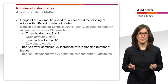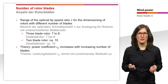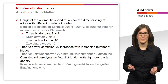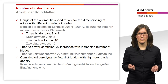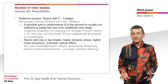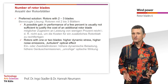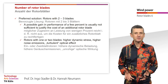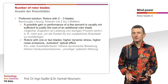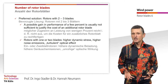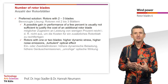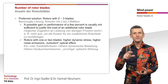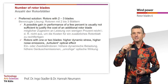In theory, the power coefficient increases with increasing number of rotor blades. However, a high rotor blade density leads to a complicated aerodynamic flow distribution. That is the reason why nowadays we only have wind turbines with 3 rotor blades — with very few exceptions of 2-bladed ones. For each additional rotor blade, you incur the full cost of that blade but gain only a very small increase in additional power.